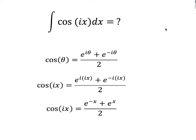To verify this, we use the identity: cos(θ) = (e^(iθ) + e^(−iθ)) / 2. Therefore cos(ix) is found by replacing θ with ix, giving (e^(i·ix) + e^(−i·ix)) / 2. Since i times i is minus one, this simplifies to (e^(−x) + e^(x)) / 2. Notice that cos(ix) is entirely real — there is no imaginary part.